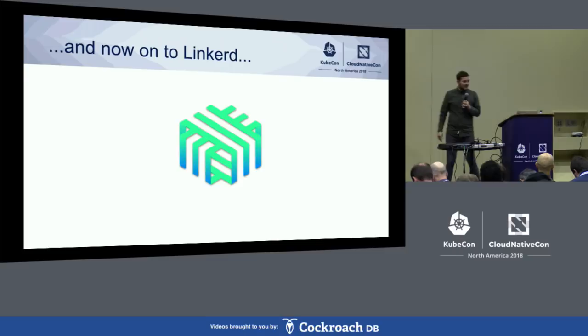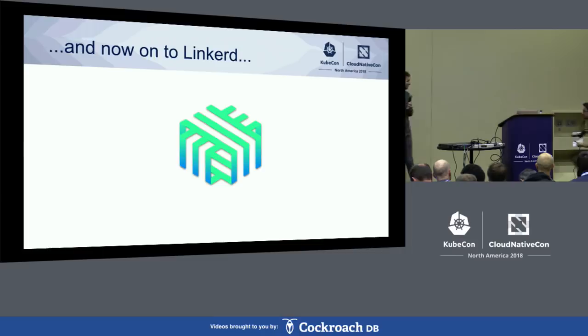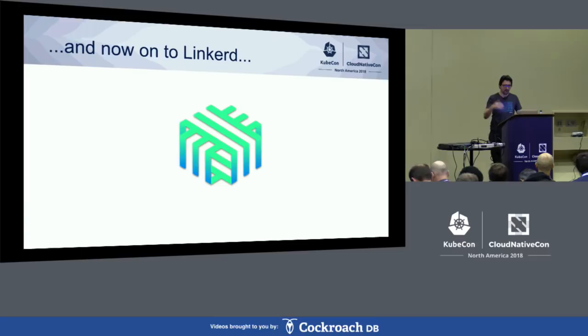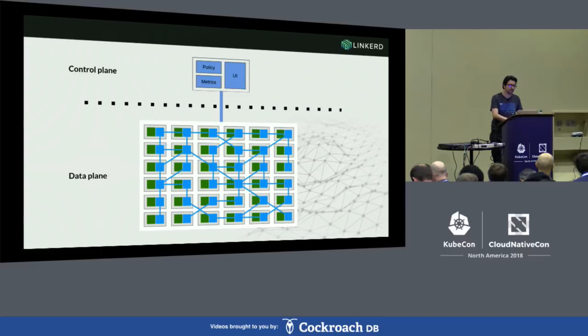All right, thanks a lot Frederick. What I'm hoping to do is walk through a similar history of how Linkerd evolved — there are actually a lot of parallels with how Linkerd 1 and then 2 evolved along with Prometheus. Linkerd is an open source service mesh for cloud-native applications. A service mesh is a layer of software that provides security, reliability, and visibility to your microservice architecture.